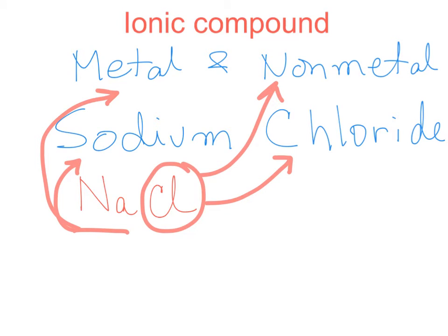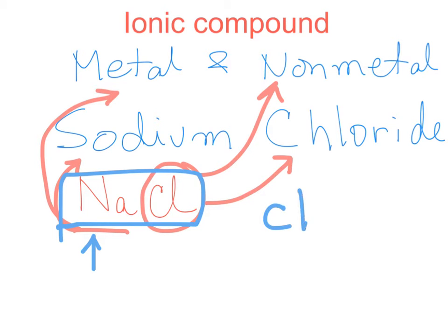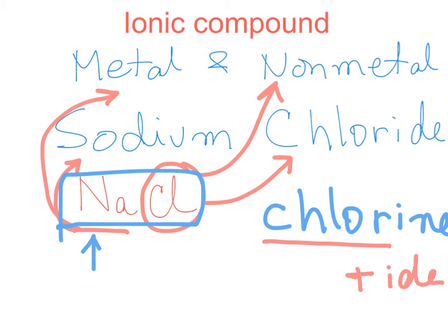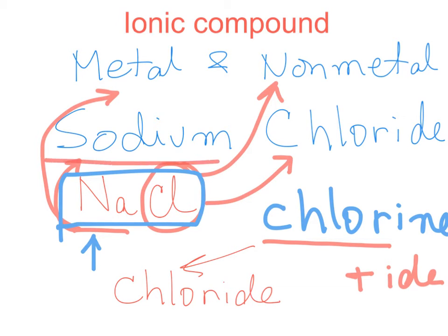How do we name ionic compounds? It's very simple. As shown by this example of sodium chloride, we have to name the metal part first. We look at the periodic table — we say sodium. The second part we look at is the anion part, the non-metal part, which in this case is chlorine. The rule for naming the non-metal part is you take the main root of the word — 'chlor' — and then you add 'IDE', so it becomes simply chloride.